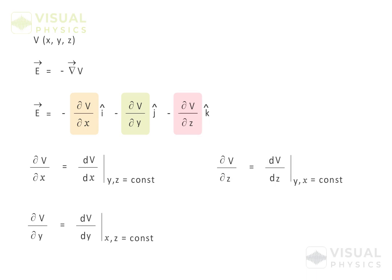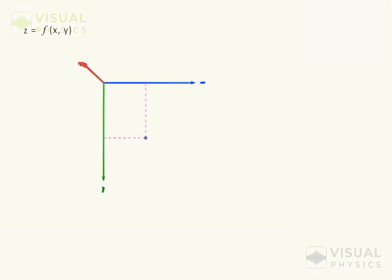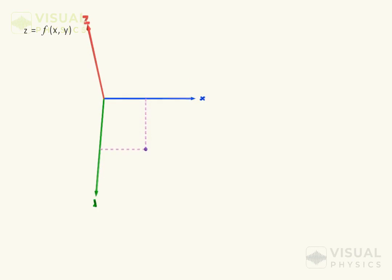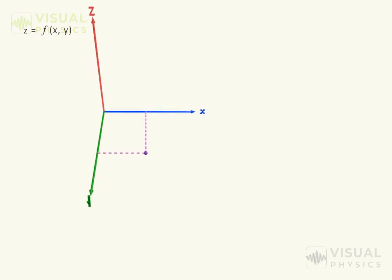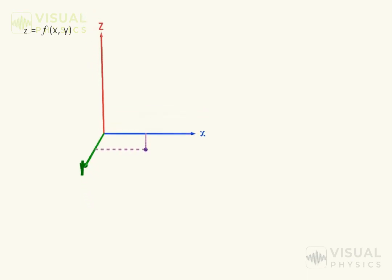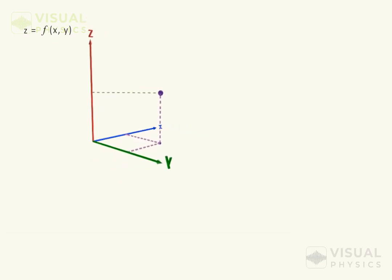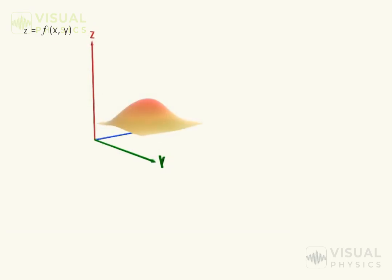To understand what partial derivatives mean, let us consider a function of x and y. At any point (x, y), the value of the function is specified along the z axis. So the function will be a surface in 3D space.